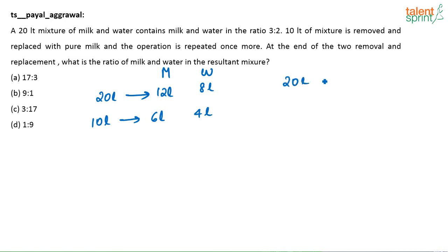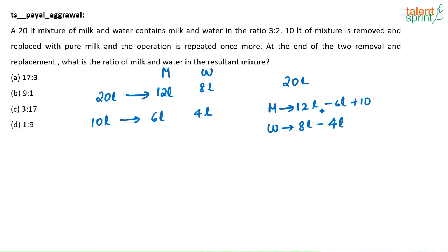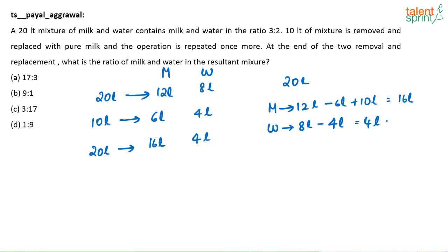From the 20 liters, milk was 12 liters. I have removed 6 liters of milk. Similarly, from the 8 liters of water, I have removed 4 liters of water. Then I am replacing it with pure milk — adding 10 liters of milk. So milk remaining is 12 − 6 + 10 = 16 liters, and water is 8 − 4 = 4 liters. So now out of the 20 liters, 16 liters is milk and 4 liters is water.